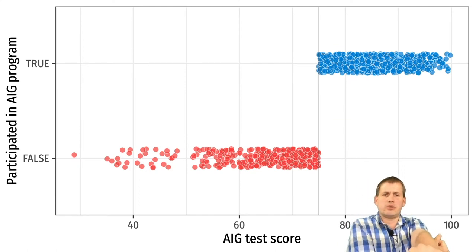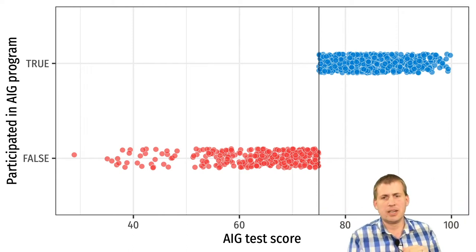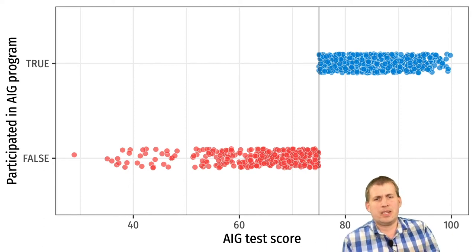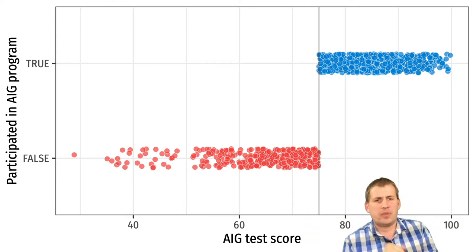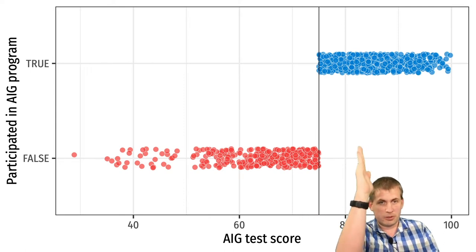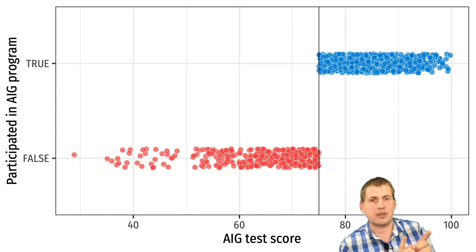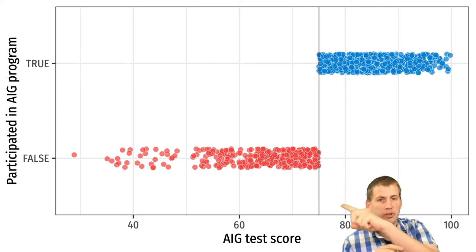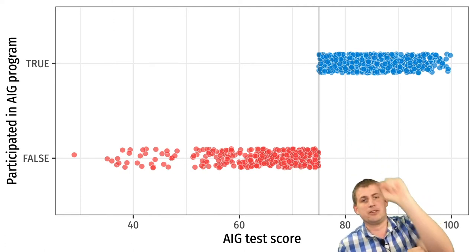Given this threshold, one helpful thing you see in regression discontinuity analysis is plotting the scores of your running variable. The AIG scores range from 30 to 100, with a line at 75 for the threshold. People who scored less than 75 aren't in the program; those who scored above 75 are. There's a very clear, clean break — this is what we call a sharp discontinuity. Nobody below 75 is in the program and nobody above 75 is out.